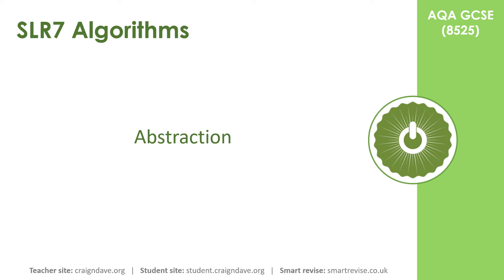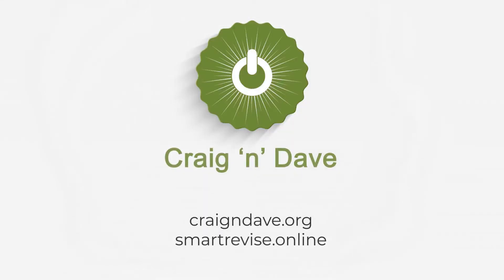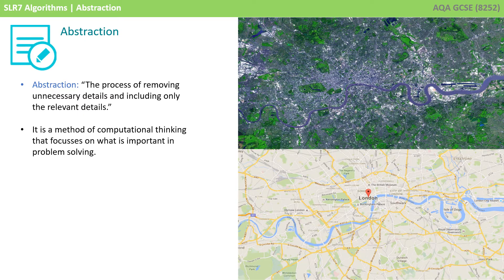In this video, we're thinking about the computational thinking concept of abstraction. Abstraction simply means removing the unnecessary details and including only the relevant details. In problem solving, it's a method of computational thinking that focuses on what's important.